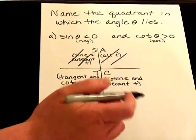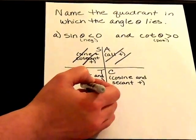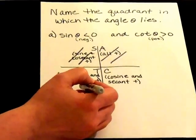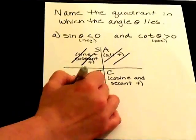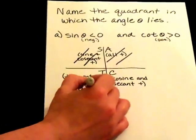Cotangent is going to be the same as tangent. So tangent is positive in the third quadrant, and sine would be negative in the third quadrant. So then we know that this angle will lie in quadrant three.